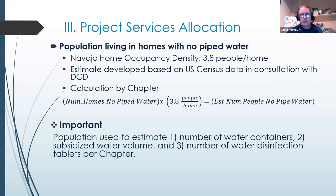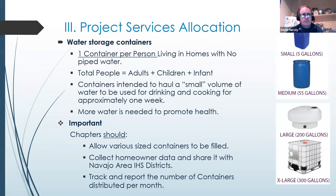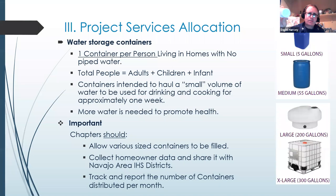We took the number of homes and had to determine the number of people, because people are what use the water. The Navajo home occupant density is about 3.8, developed based on U.S. census data in consultation with the Division of Community Development. The number of homes without piped water times 3.8 gives the number of people — that's where we got the estimate of around 37,000 people. We use this number to determine the number of containers, the subsidized water volumes, and the number of water disinfection tablets provided by each chapter.